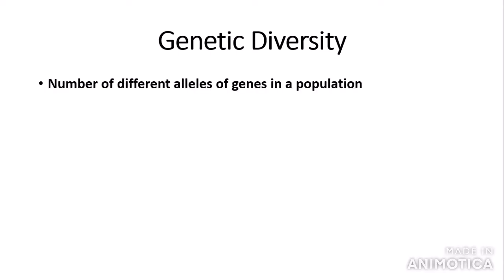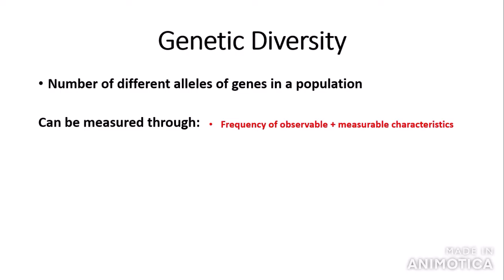So, genetic diversity. I covered this in my genetic diversity and adaptations video, so go check that out. Genetic diversity is the number of different alleles of genes in a population, with alleles being different variations of the same gene. Genetic diversity can be measured through frequency of observable and measurable characteristics — so appearance, DNA sequence, mRNA sequence, and amino acid sequence. The frequency of observable characteristics is being used less and less now through recent developments in gene technologies, and this method is less accurate as two organisms may look very similar but might have very different DNA or a high genetic diversity.